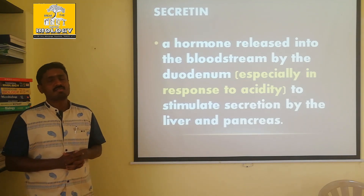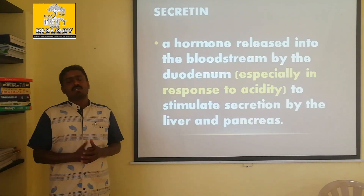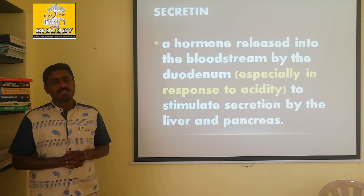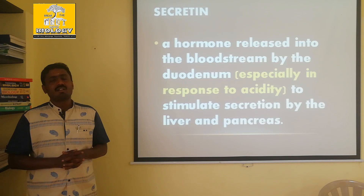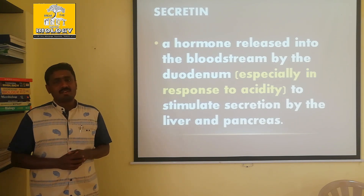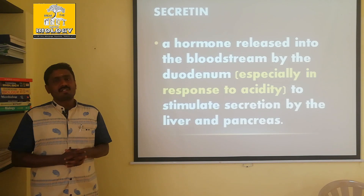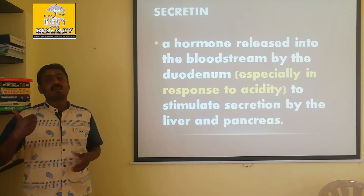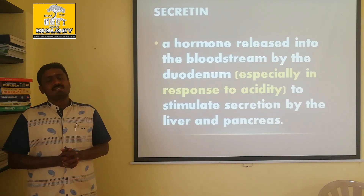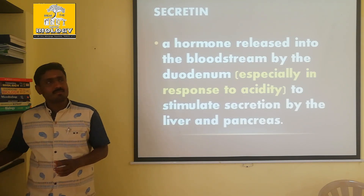This is the process: the liver and pancreas are induced by the chyme. The chyme is highly acidic due to HCl from the stomach. To neutralize the acidity, bile juice is produced by the liver — it is alkaline in nature and bitter in taste. The pancreas produces enzymes such as amylase, lipase, and trypsinogen. The second hormone stimulating this secretion is secretin.